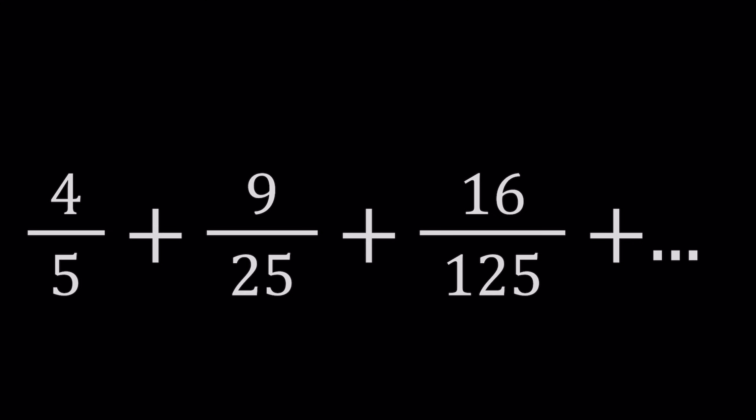By the way, it converges and you can check it out. But this is how the series proceeds. The numerators are perfect squares, 2 squared, 3 squared, 4 squared, and so on and so forth. Denominators are powers of 5, 5 to the first, 5 to the second, 5 to the third. You get the idea? So that's how the series is made.